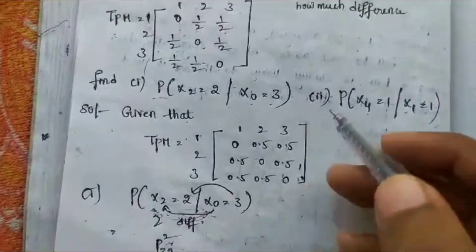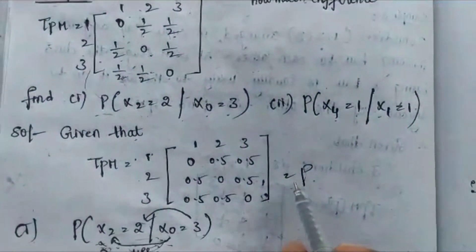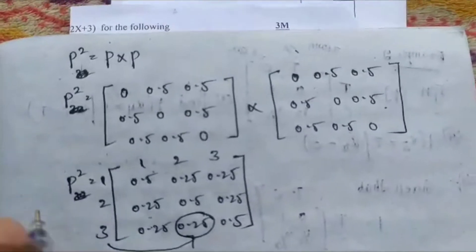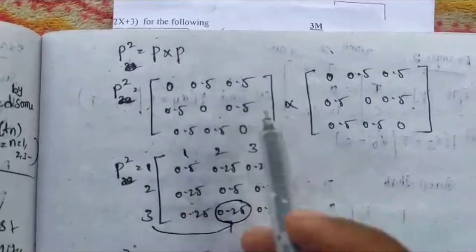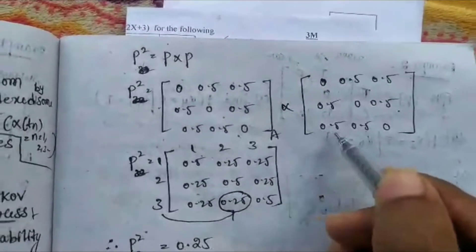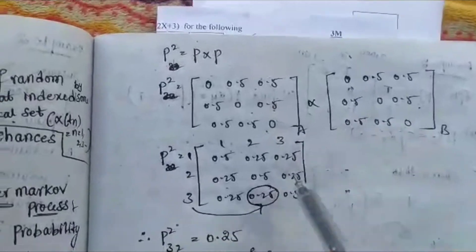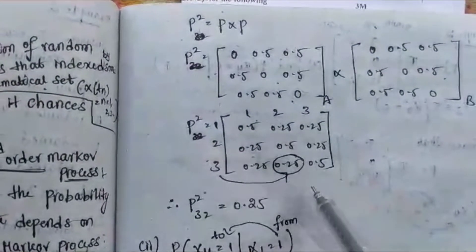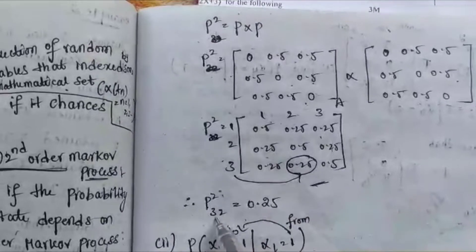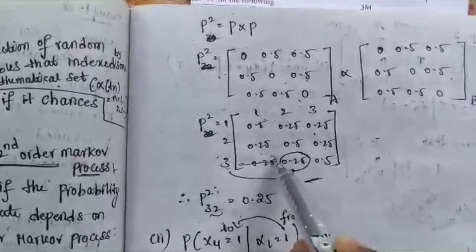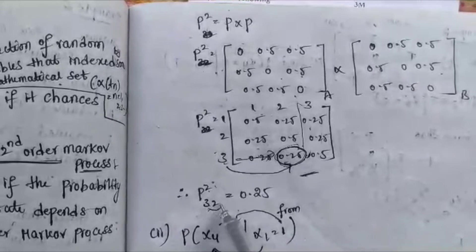We know the value of P. P squared means P × P. We take matrix A as one copy of P and matrix B as another copy of P, substitute into the calculator (A × B) to get P squared. From that P squared matrix, the value at position 3 to 2 is 0.25. Therefore P²(3→2) = 0.25.